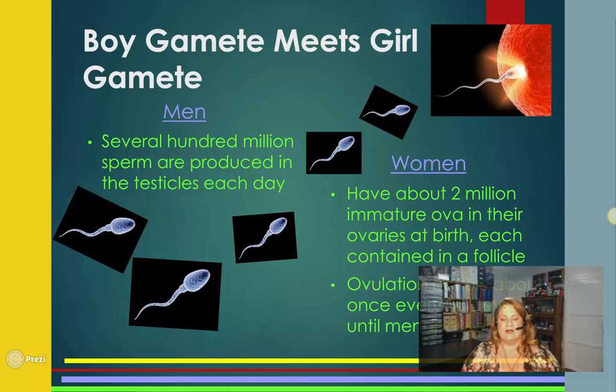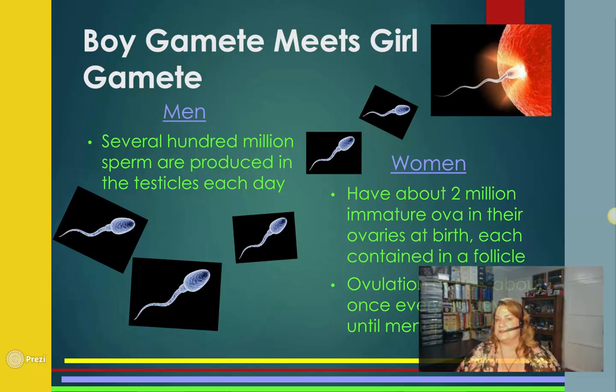Ovulation, when an egg is produced that can be fertilized, happens about every 28 days until menopause. Girls can have their first period anywhere from age 8 to 15, depending on the female. Menopause can be as early as their 30s or as late as their 50s. Some women don't ovulate every month, so there's a lot that goes into having a baby successfully.